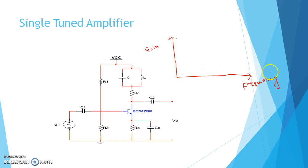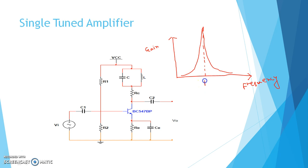Here frequency is on the x-axis and gain is on the y-axis. The gain versus frequency graph should be like this: at a particular frequency the gain should be very high, and this frequency is the resonant frequency F = 1/(2π√LC). The bandwidth will be very small, so that other frequency components get no chance to be amplified.